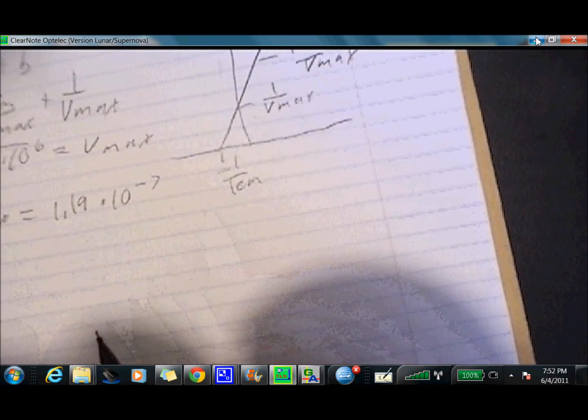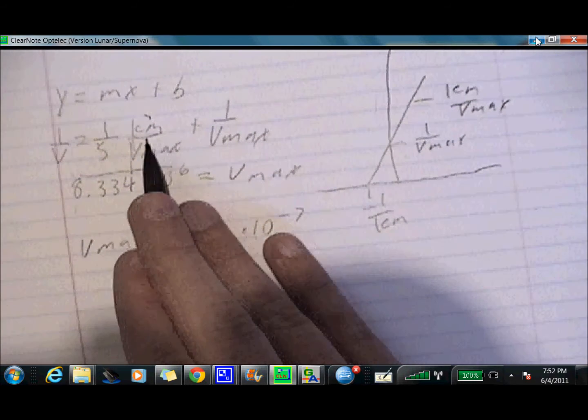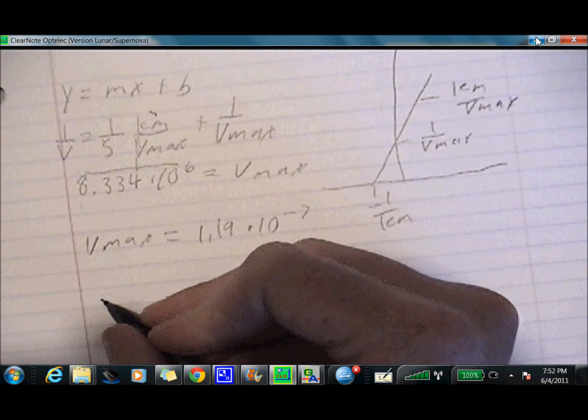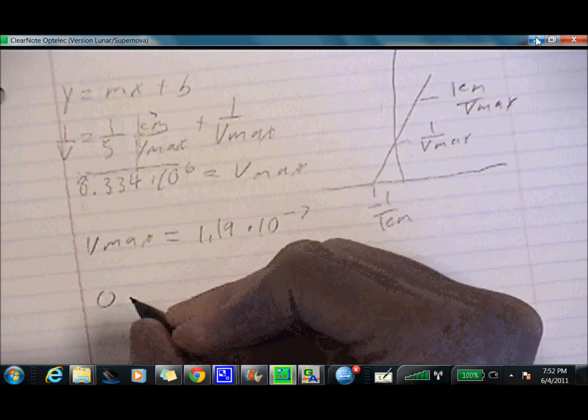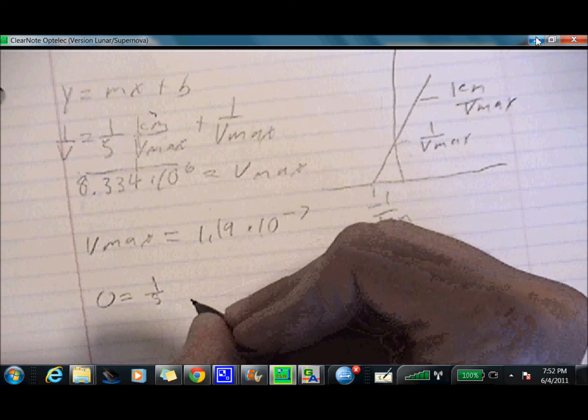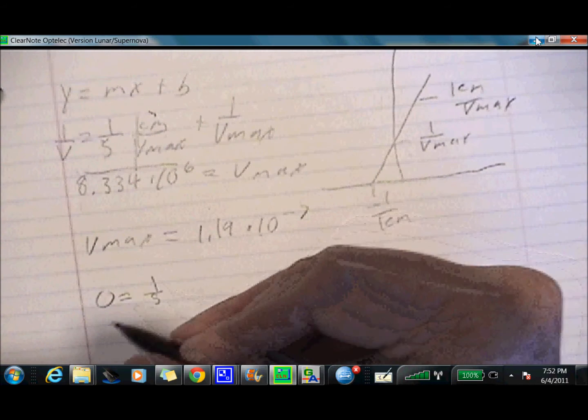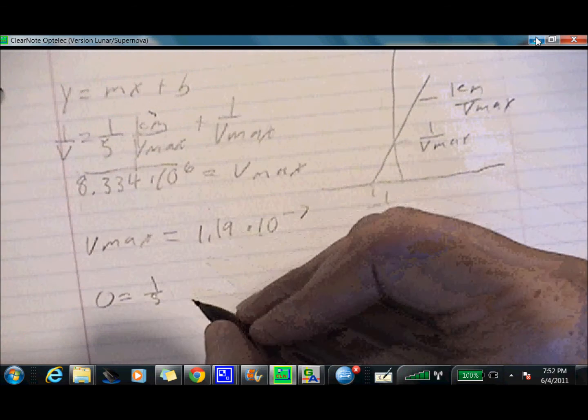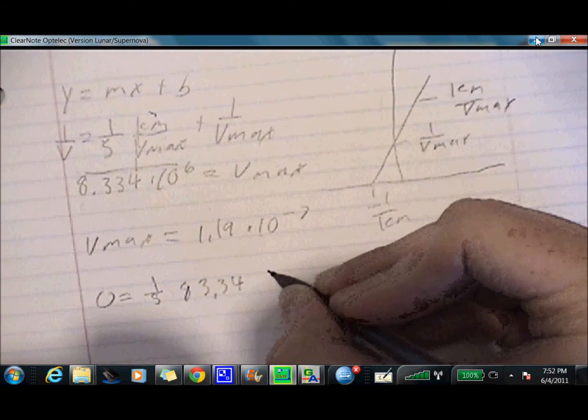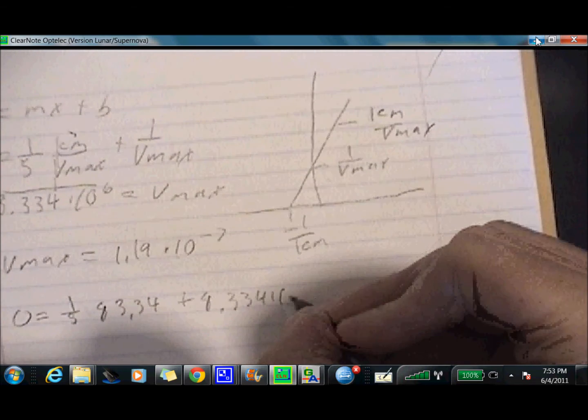So what we need to be looking for is our X intercept. So taking these numbers, which was, our slope again was 83.34. So this was, we're going to plug in zero for Y. And we're going to have one over S. And we're solving for one over S because that's going to be our X intercept, right? So when Y is zero, what is X? That's what your X intercept is. Your slope is 83.34 plus 8.334 times 10 to the sixth.